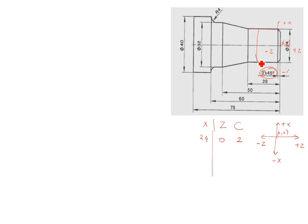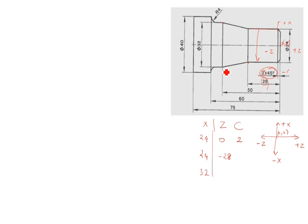After that, X remains 24 up to this point. Then moving this side, the Z value is minus 28, so you write minus 28. After that the X value goes up to 32 diameter, so write 32. Up to here is 50, this is minus, so you write Z as minus 50. Minus 15 also applies here.